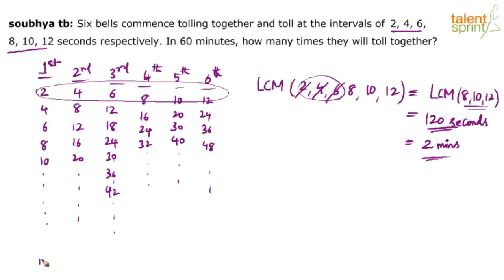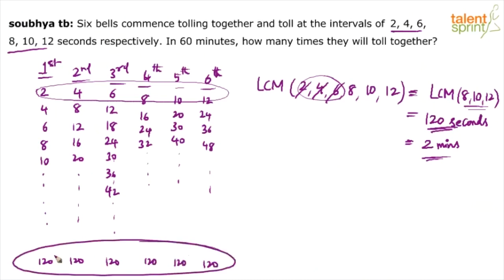So the common ringing time of 120 seconds applies to all 6 bells together — this is the LCM, and this is the time at which they toll together. After every 2 minutes they toll together. In a span of 60 minutes, 60 divided by 2 equals 30, so most people would say they ring together 30 times.